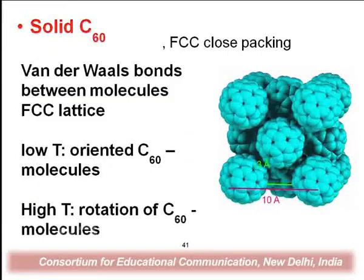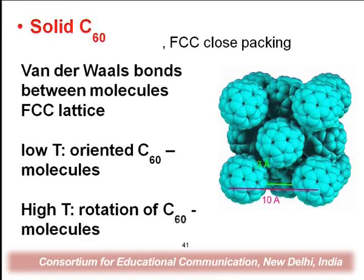The other part is solid C60. All the fullerenes are wonderful ball-like structures, bound between molecules by the FCC face-centered closed packing. At low temperature there is oriented C60, and at high temperature we get rotation of the C60 molecule — one type of solid form of C60.